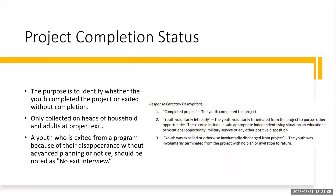Project completion status: the purpose of this data element is to identify whether the youth completed the project or exited without completion. It's only collected for heads of household and adults at project exit. A youth who is exited from a program because of their disappearance without advanced planning or notice should be noted as no exit interview completed. Response categories for project completion include: completed project, youth voluntarily left, or youth was expelled or otherwise involuntarily discharged from the project.